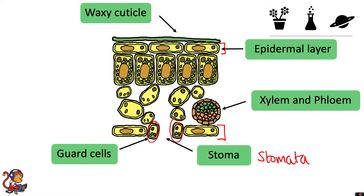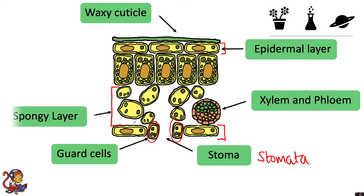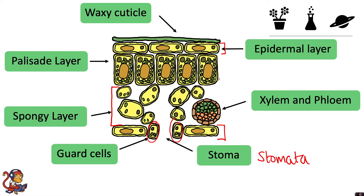There is a layer of cells above this bottom epidermal layer with lots of gaps in between, and this is called the spongy layer. Above this you have rectangular cells which are packed close together, and this is called the palisade layer.